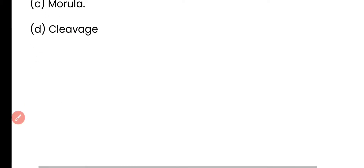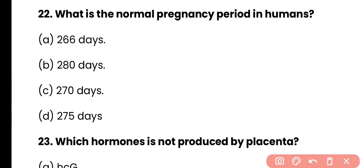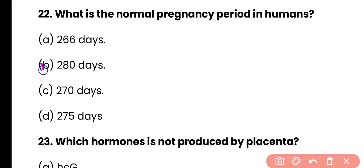Question 22: What is the normal pregnancy period in humans? Options: 266 days, 280 days, 270 days, or 275 days. Correct answer is option B. 280 days is the normal pregnancy period in humans, which is equal to approximately 38 to 40 weeks.